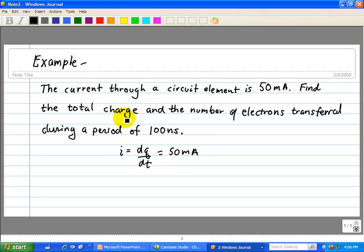The total charge and the number of electrons transferred during a period of 100 nanoseconds. So our time is 100 nanoseconds, so we integrate both sides of this equation, going from q1 to q2, our upper and lower limits respectively, dq.